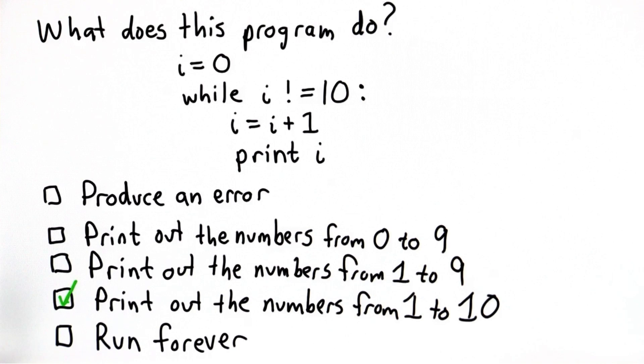So the answer is it prints out the numbers from 1 to 10. And if we follow through the code, we can see why.